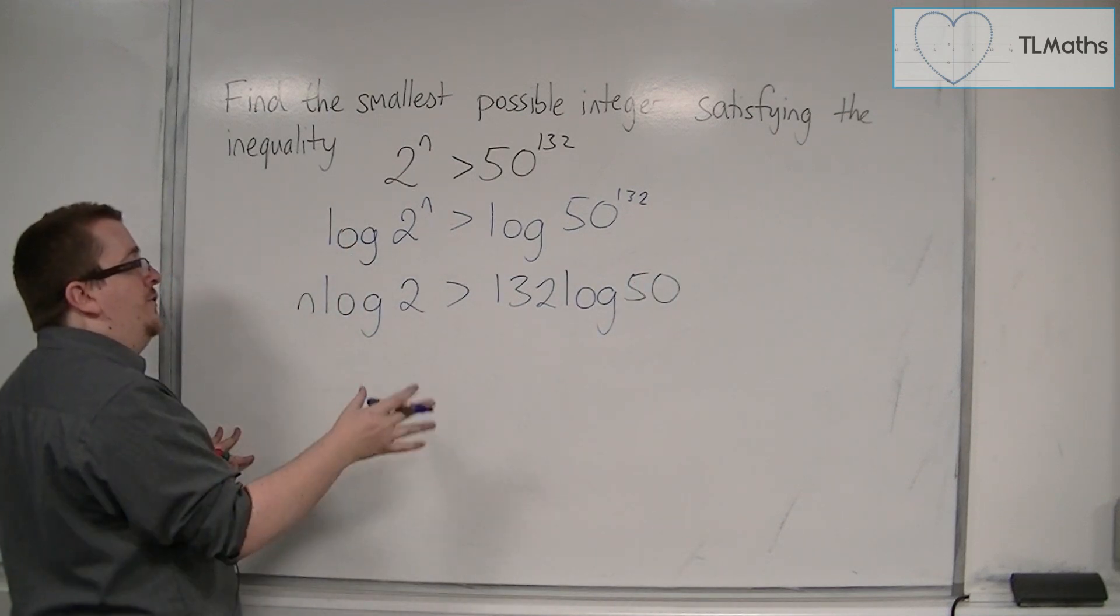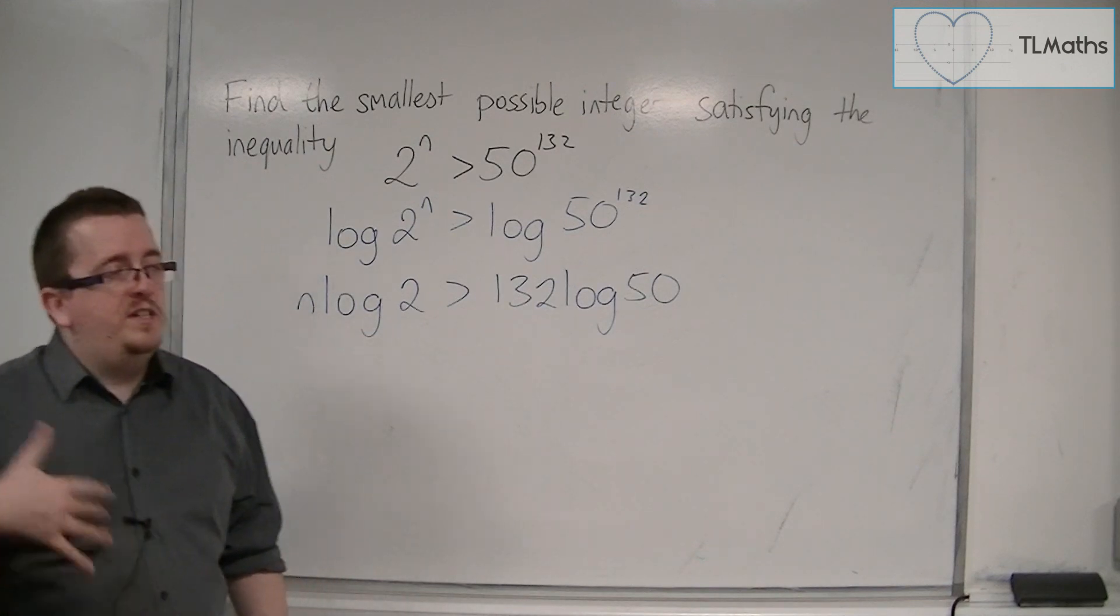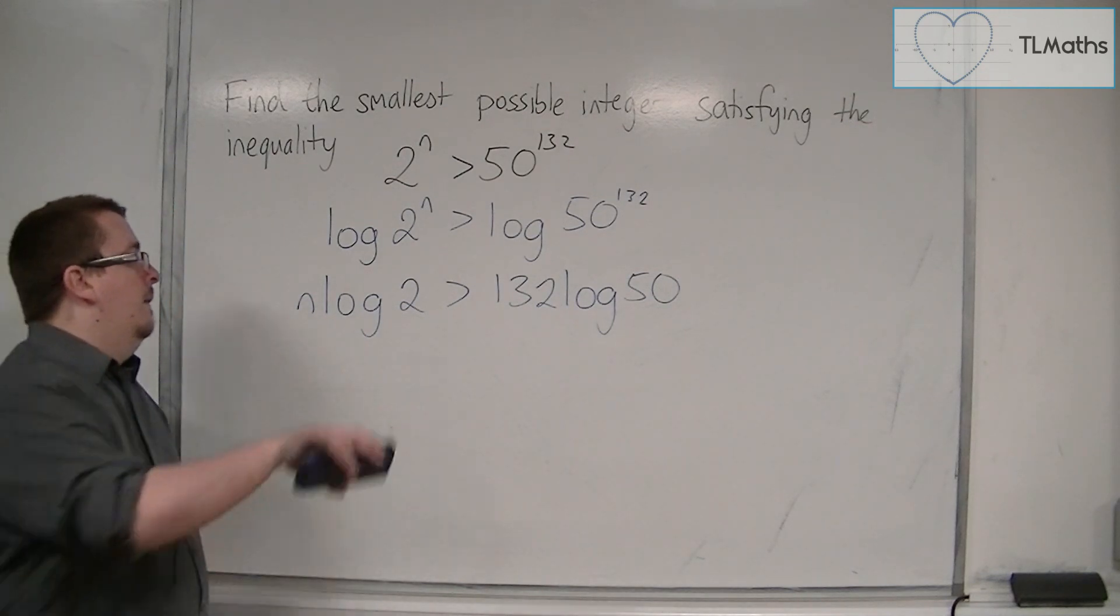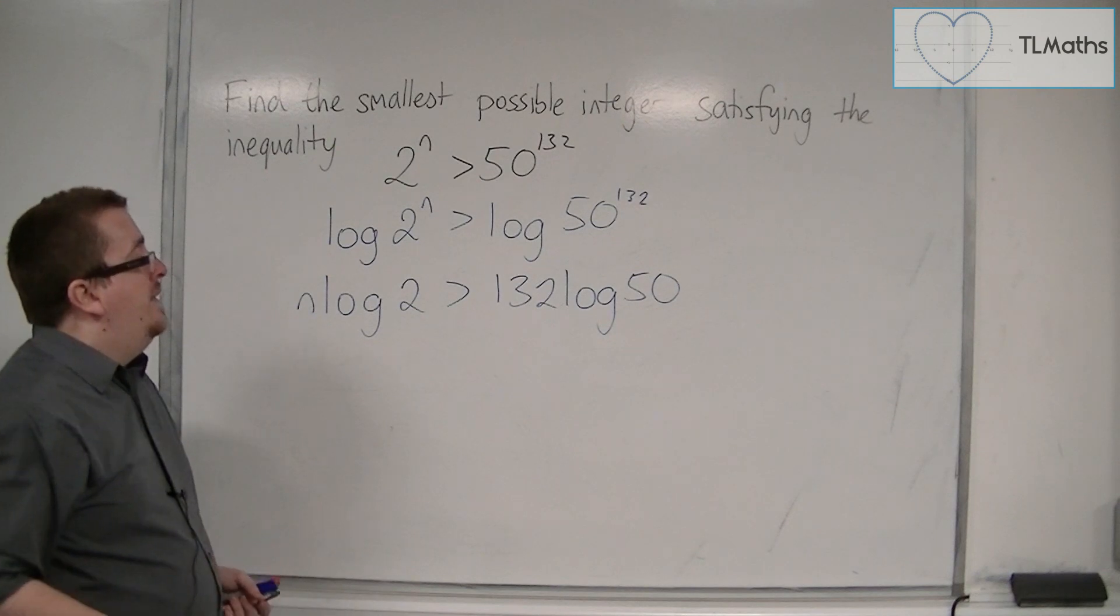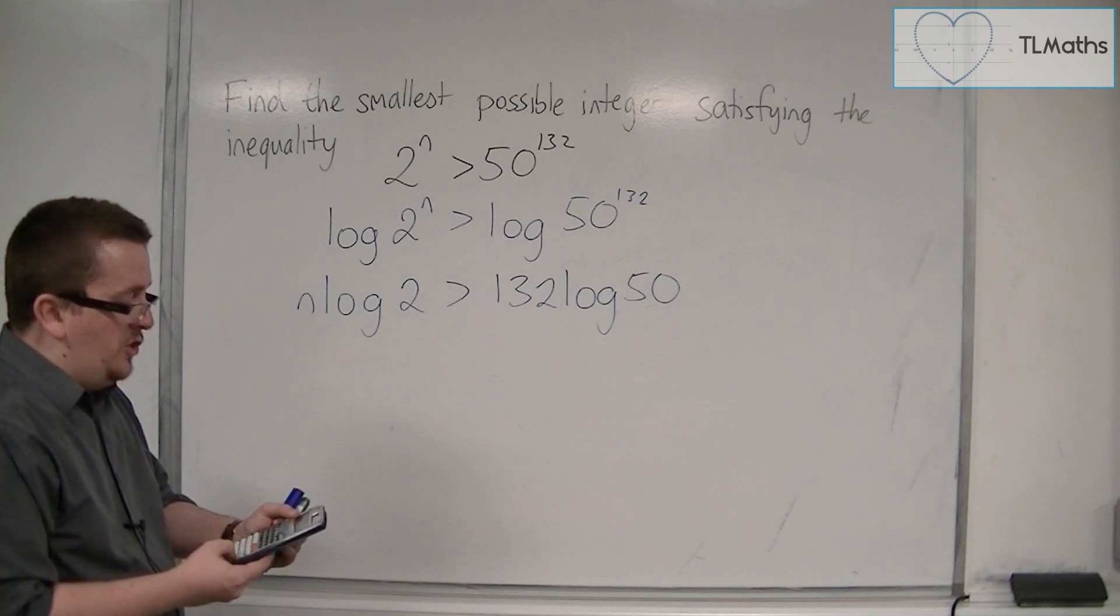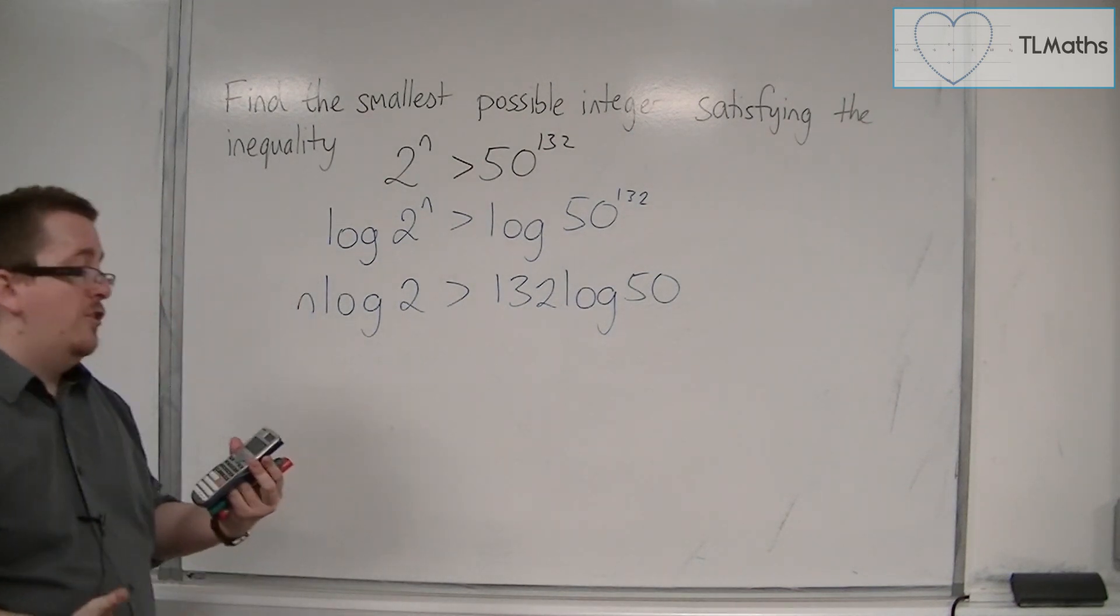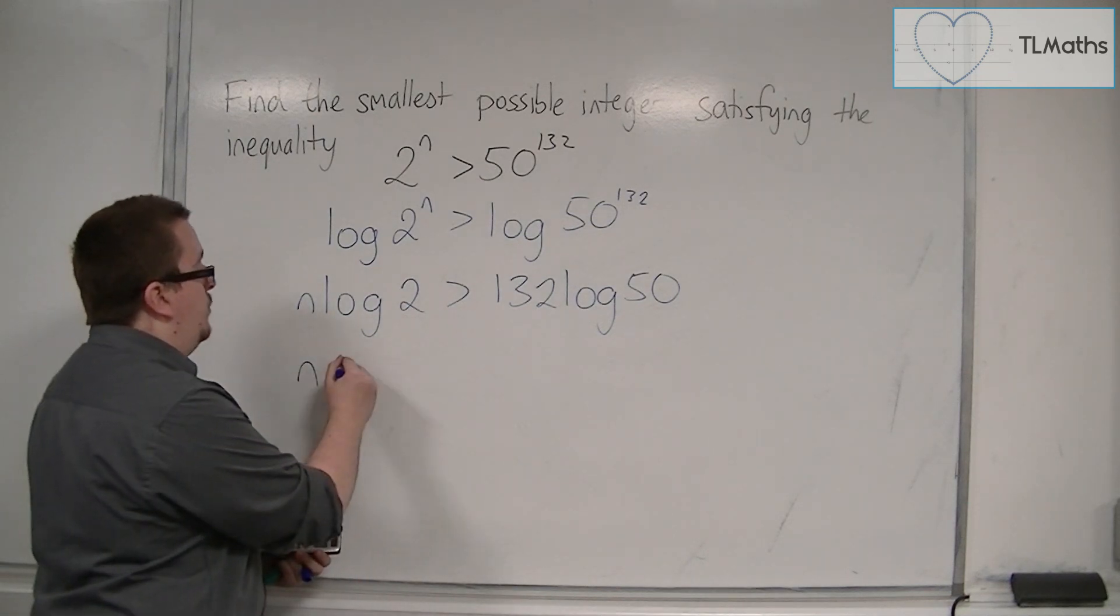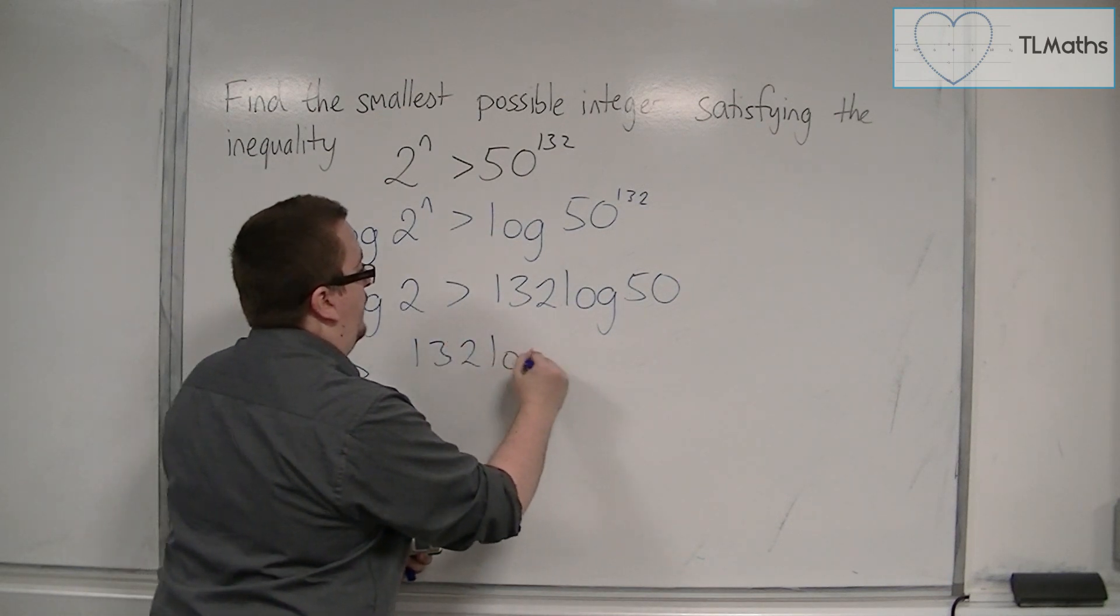We can then divide both sides by log 2. We need to be careful because when we divide by a number in an inequality, the sign may change if the number is negative. Let's check: log 2 equals 0.301 to three decimal places, so it's positive. I can divide through by log 2 without worrying about the sign changing.